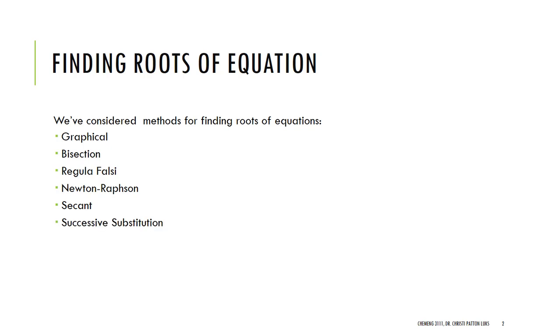And our final solution method that we looked at was successive substitution. Now successive substitution is an algebra based method unfortunately it can be unreliable but if you have a little bit of algebra talent you can try a different algebra variation on your function and maybe get it to work. So it's easy it only requires one point but it doesn't always work and it may be very slow.